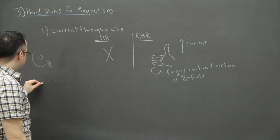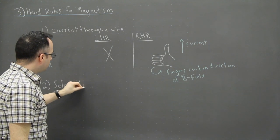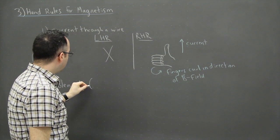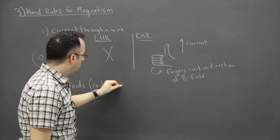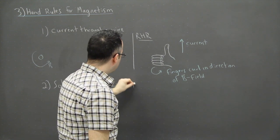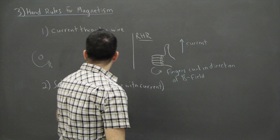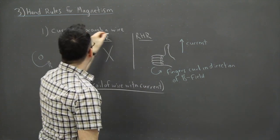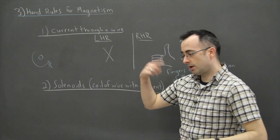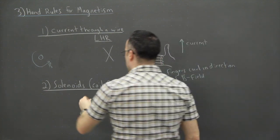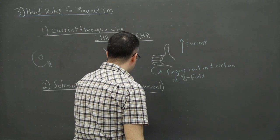The second hand rule has to do with solenoids. A solenoid is just a coil of wire with current going through it. Again, there's no left hand rule for solenoids — there's only a right hand rule.